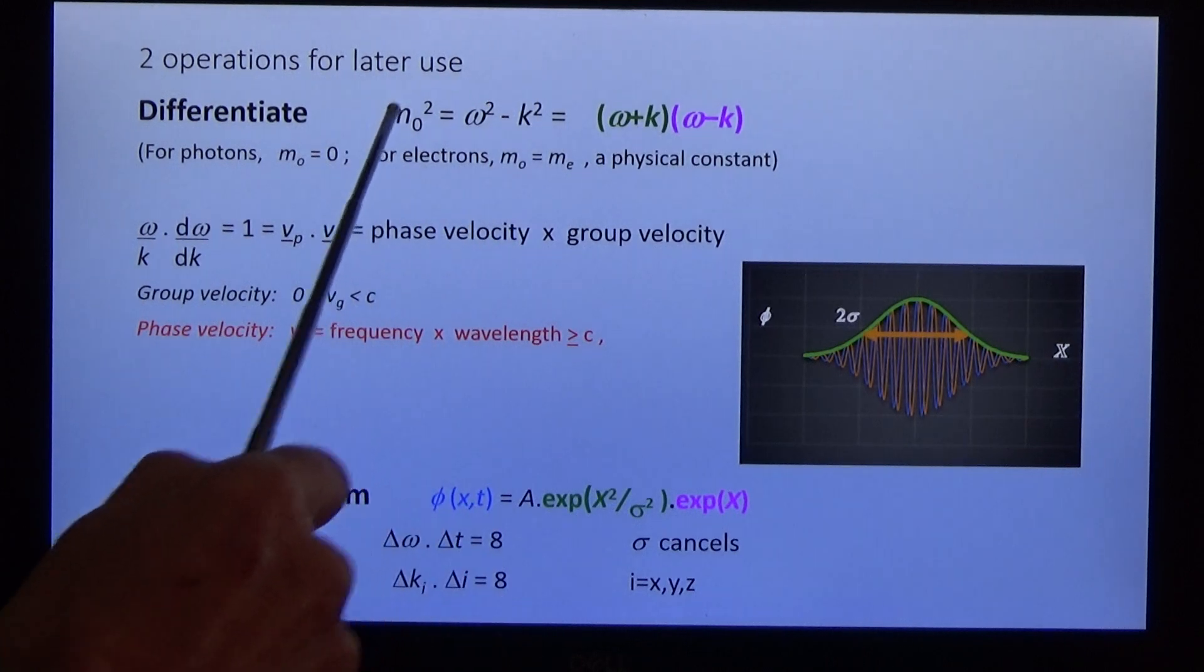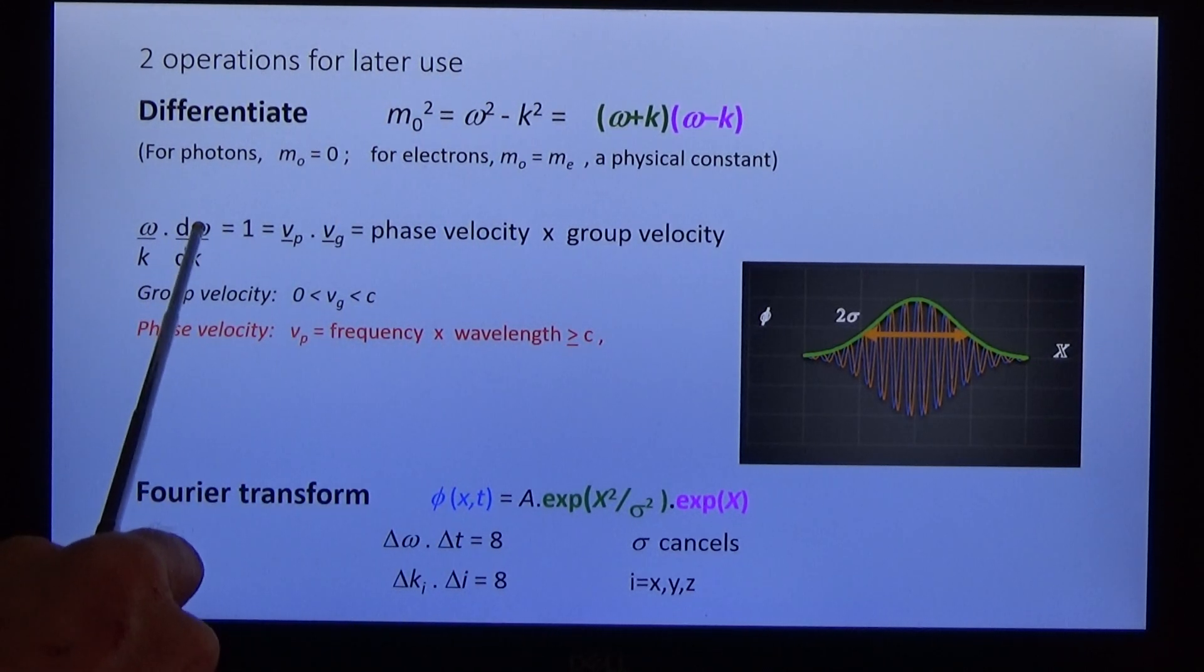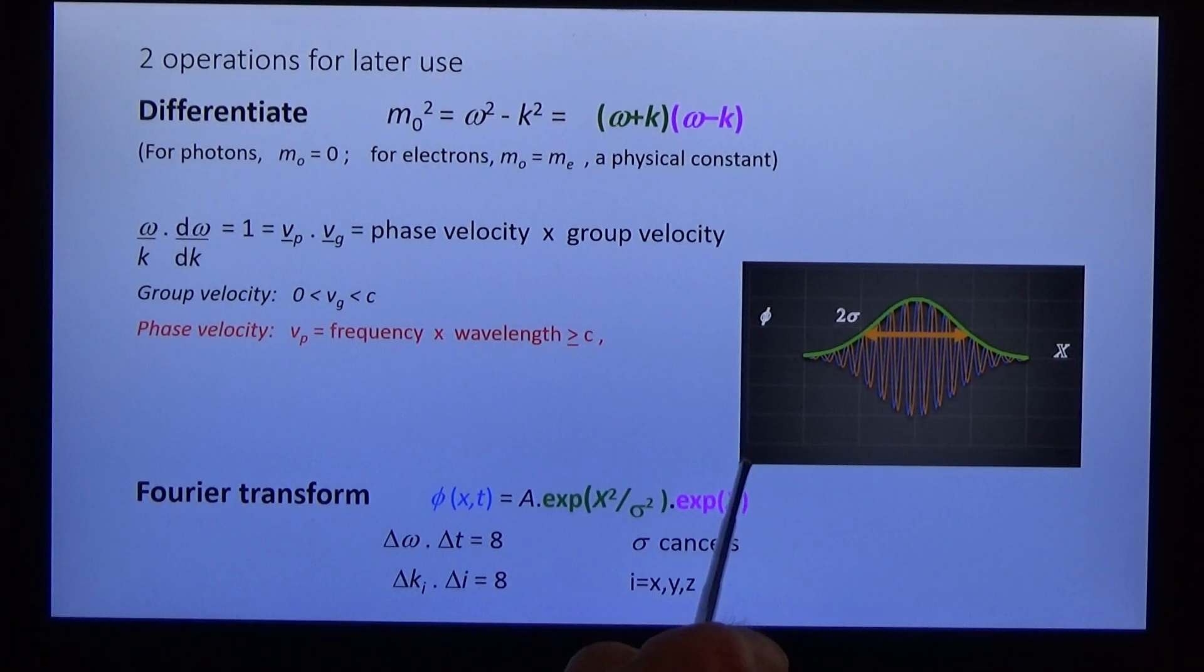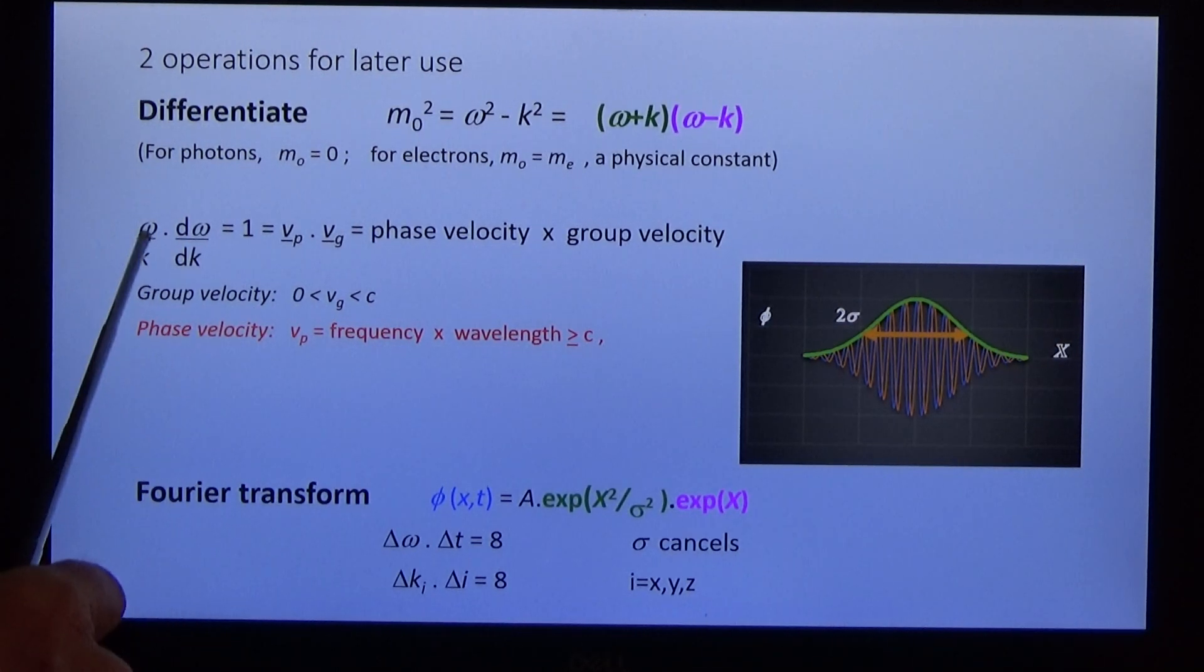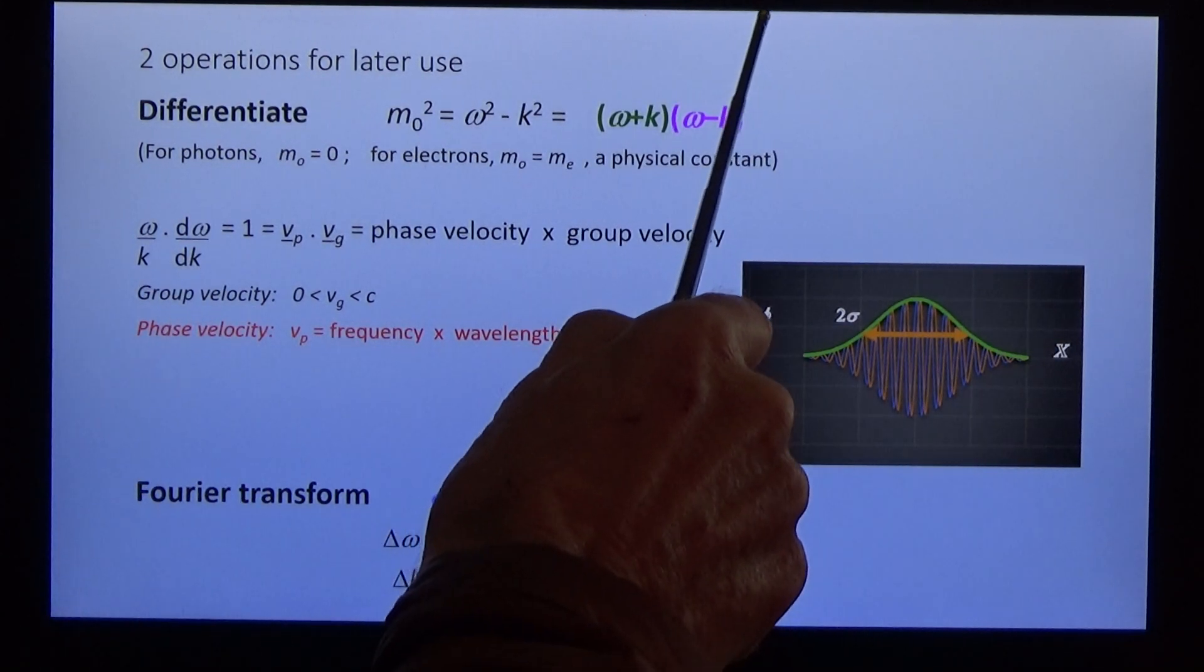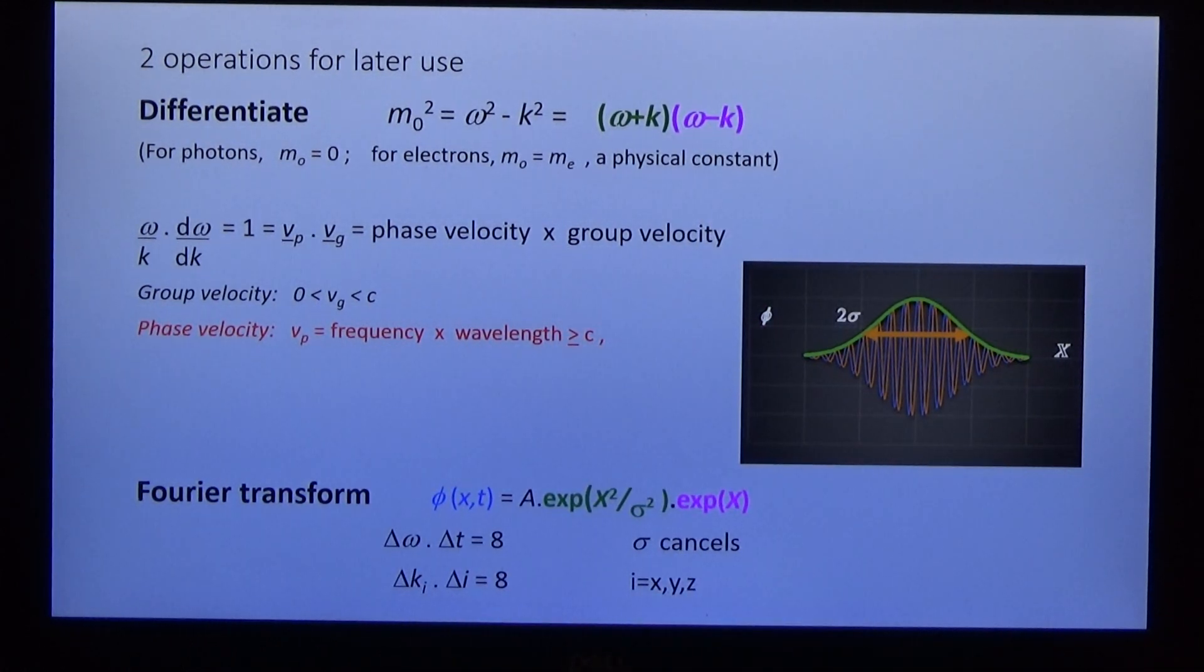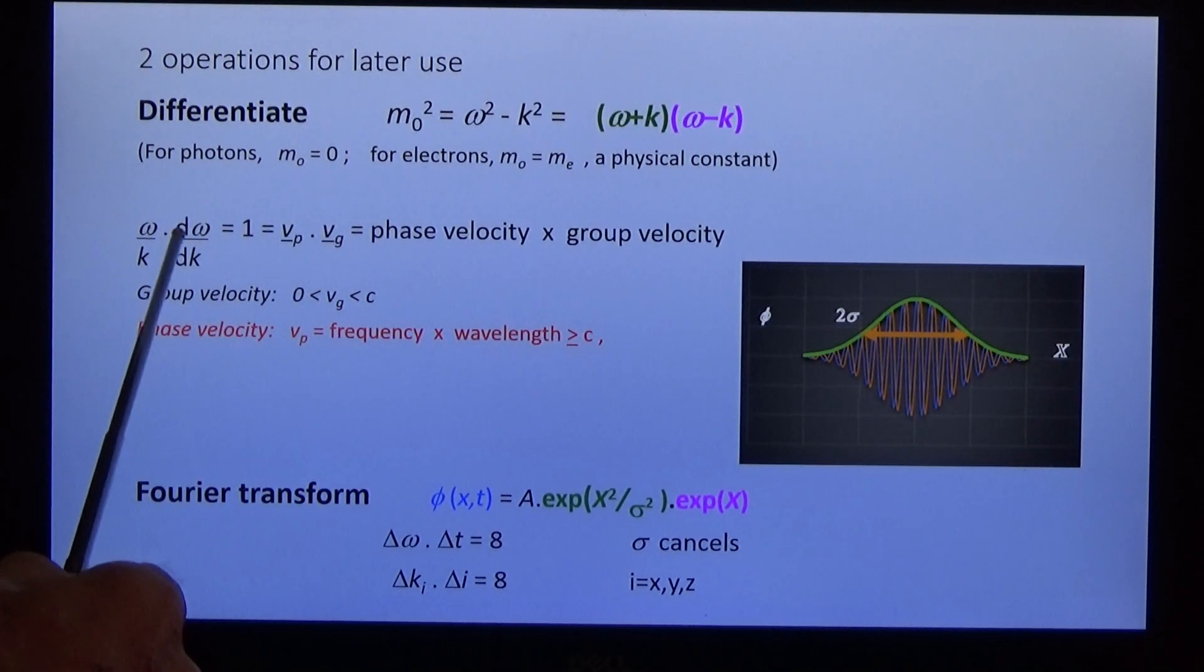When we differentiate this equation, we find that the product of the phase velocity and the group velocity is equal to one. The group velocity is well known from relativity and it varies between zero and c, the speed of light. The phase velocity is the inverse and it varies from near infinity to c. The phase velocity is not measured because it's faster than light, but it is known.